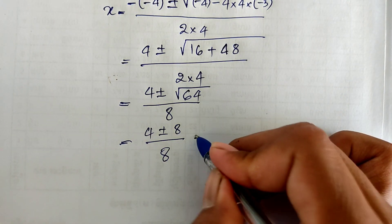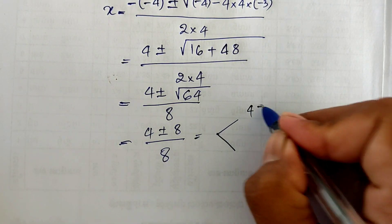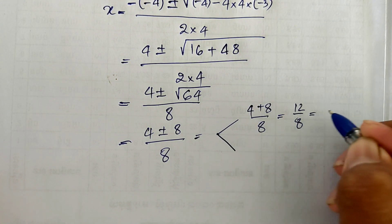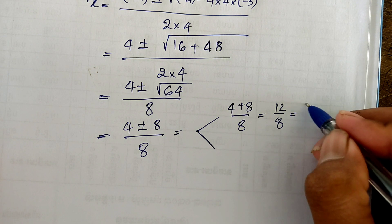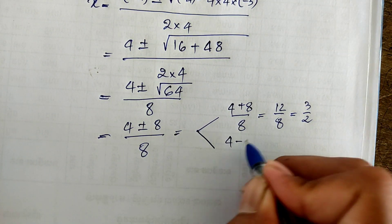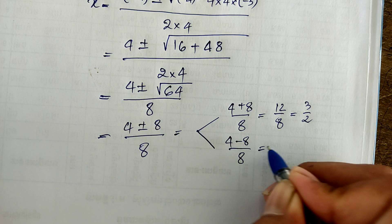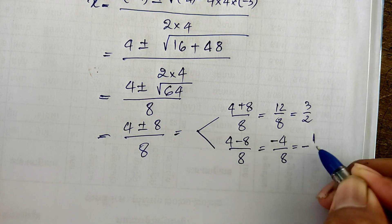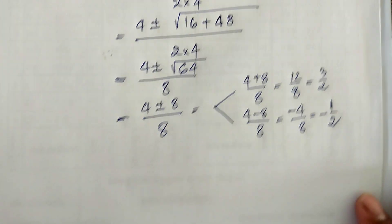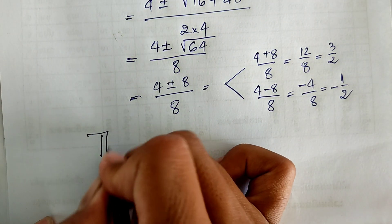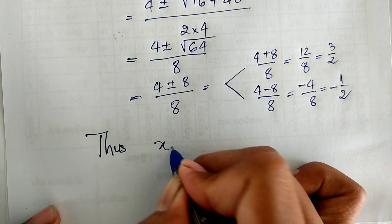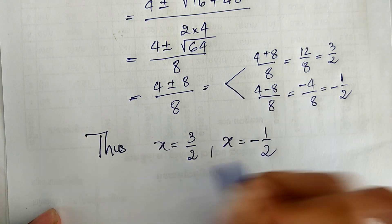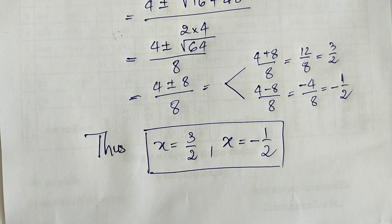So h equals 4 plus 8 divided by 8, which equals 12 divided by 8. Simplifying by 4, we get 3 divided by 2. And h equals 4 minus 8 divided by 8, which equals minus 4 divided by 8. So our solutions are h equals 3 divided by 2 and h equals minus 1 divided by 2.